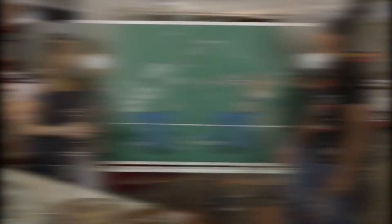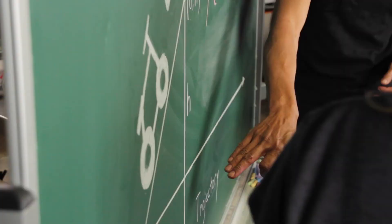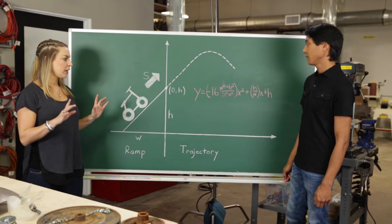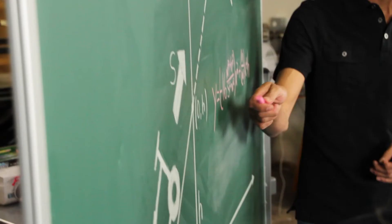Here's a model of the ramp. So the ramp's run has a width W, and the ramp's height is H, or the rise. Okay, so the bike launches from the ramp at coordinate 0H, right? Right. And at that point, the speed is given by S in feet per second.